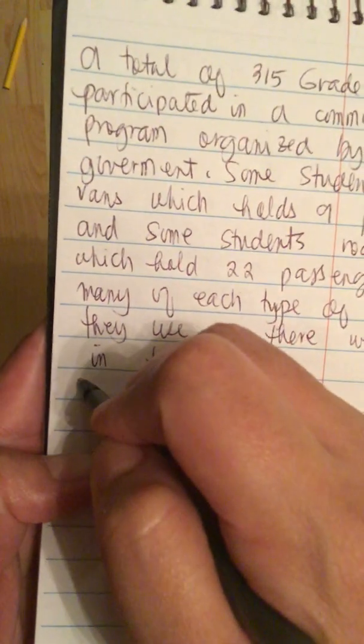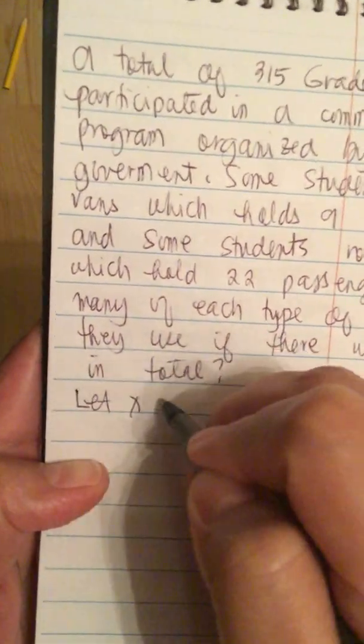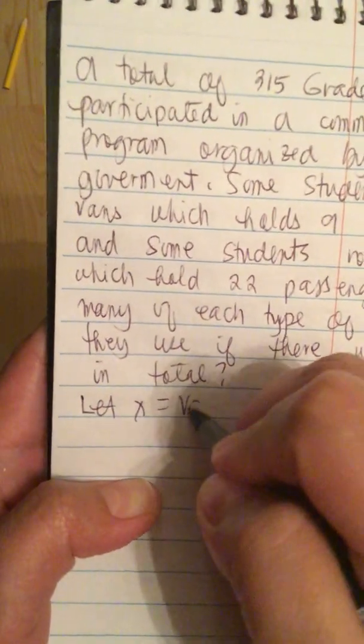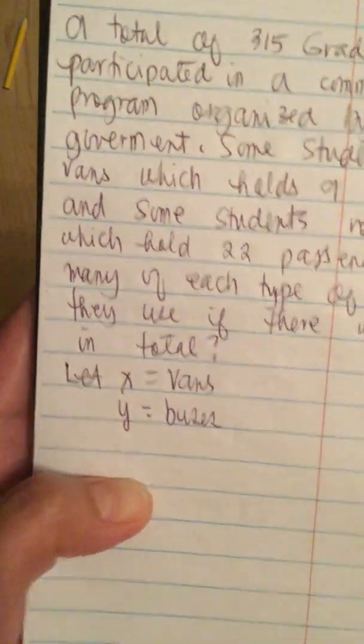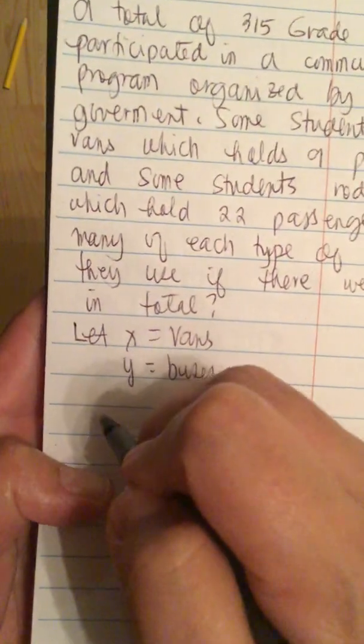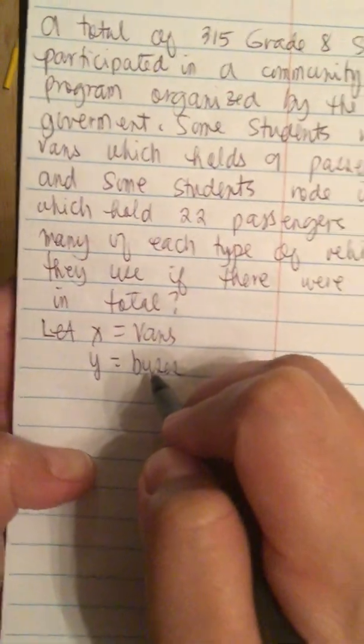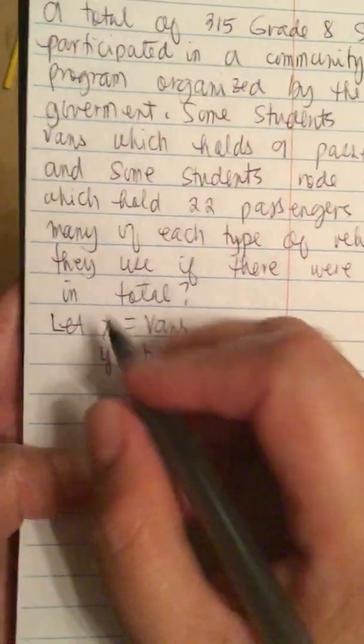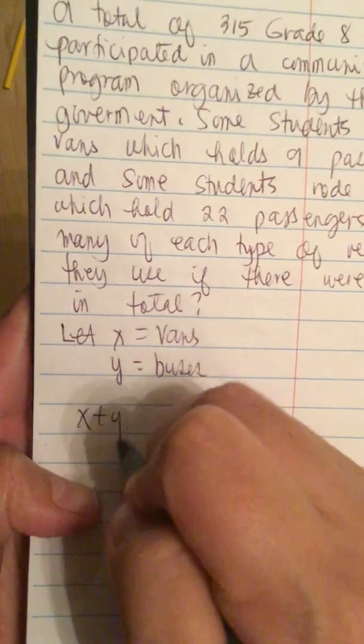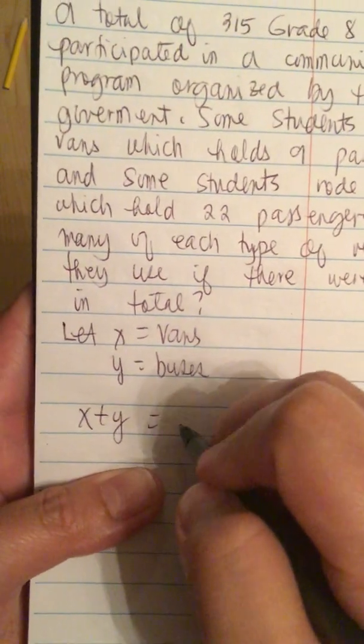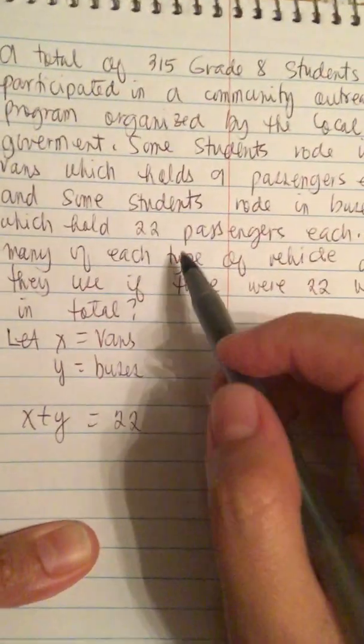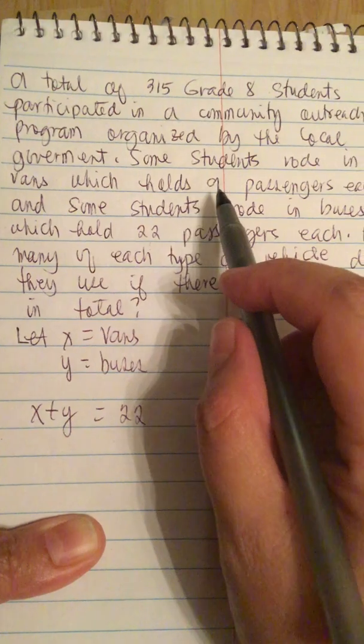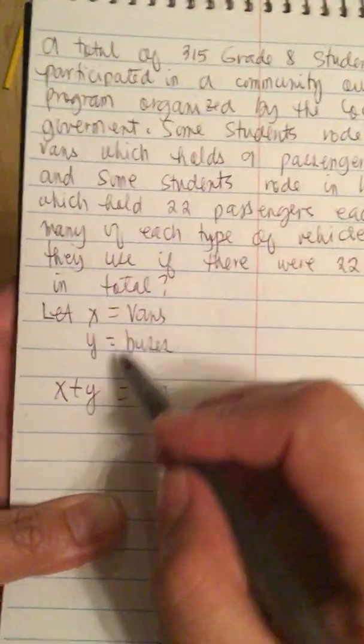So we let x equal vans and y equal buses. Now they told us that vans plus buses equals 22. That means x plus y is equal to 22.